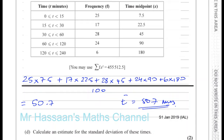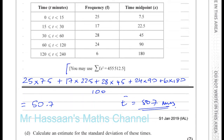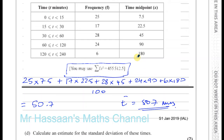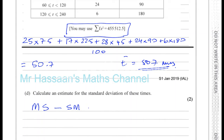The mean of the squares is conveniently related to what's given in the table. They've taken the mid-interval values, squared them, multiplied by the frequencies 25, 17, 28, 24, and 6, and added them together — that's the sum of the squares. We want the mean of the squares, so we take the sum of fx-squared, divide by the frequency which is 100, and subtract the square of the mean.